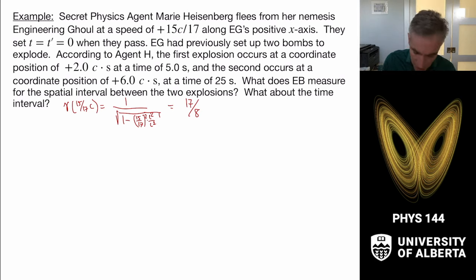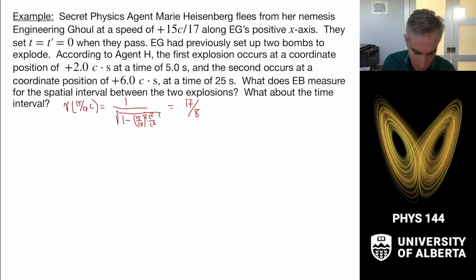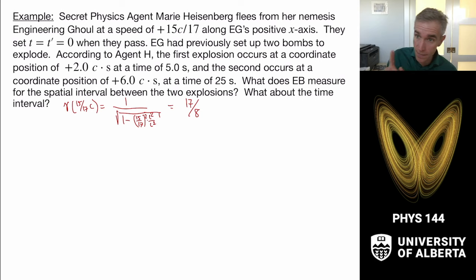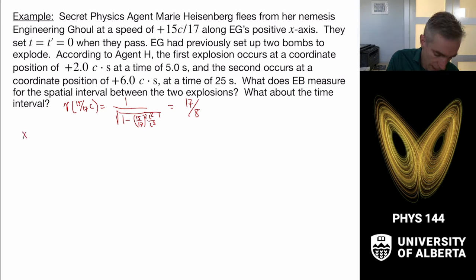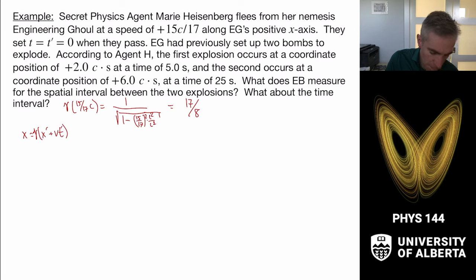For this problem we need the inverse Lorentz transforms since Marie Heisenberg is the moving observer. The inverse transform gives x equals gamma times (x prime plus v t prime). Using gamma equals 17/8 and substituting in the coordinates of each event allows us to find the engineering ghoul's measured coordinates. So we plug in 17/8 times the relevant quantities to find the positions and times of both explosions in the stationary frame.